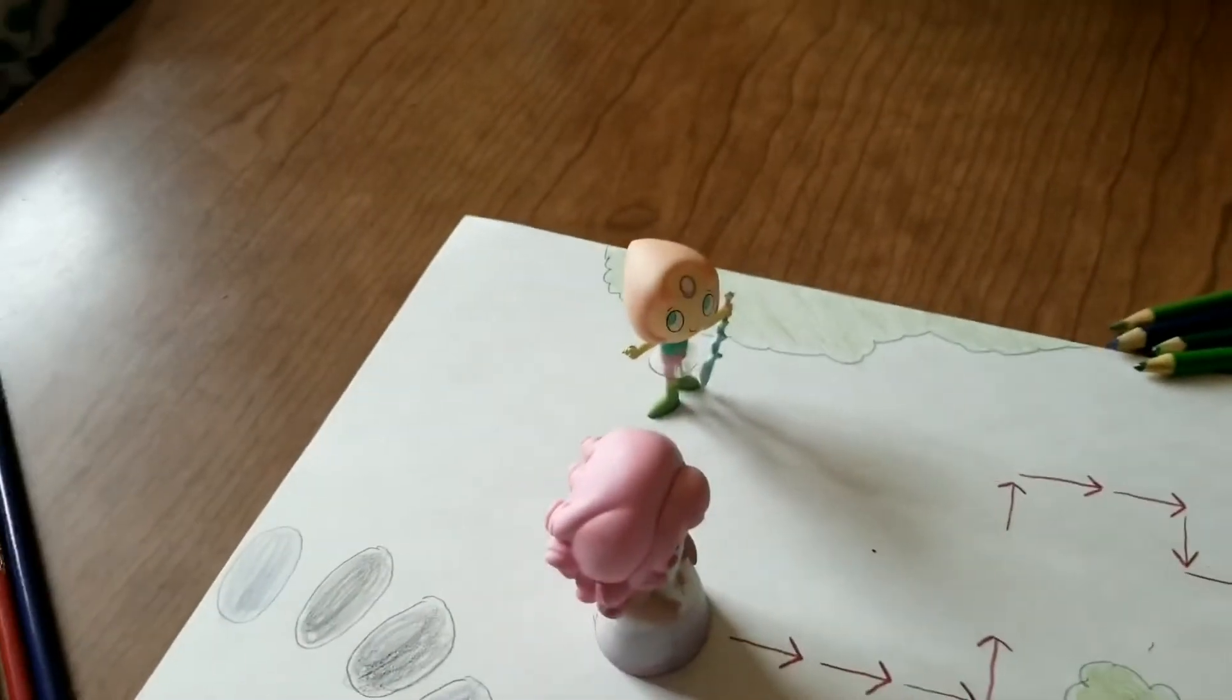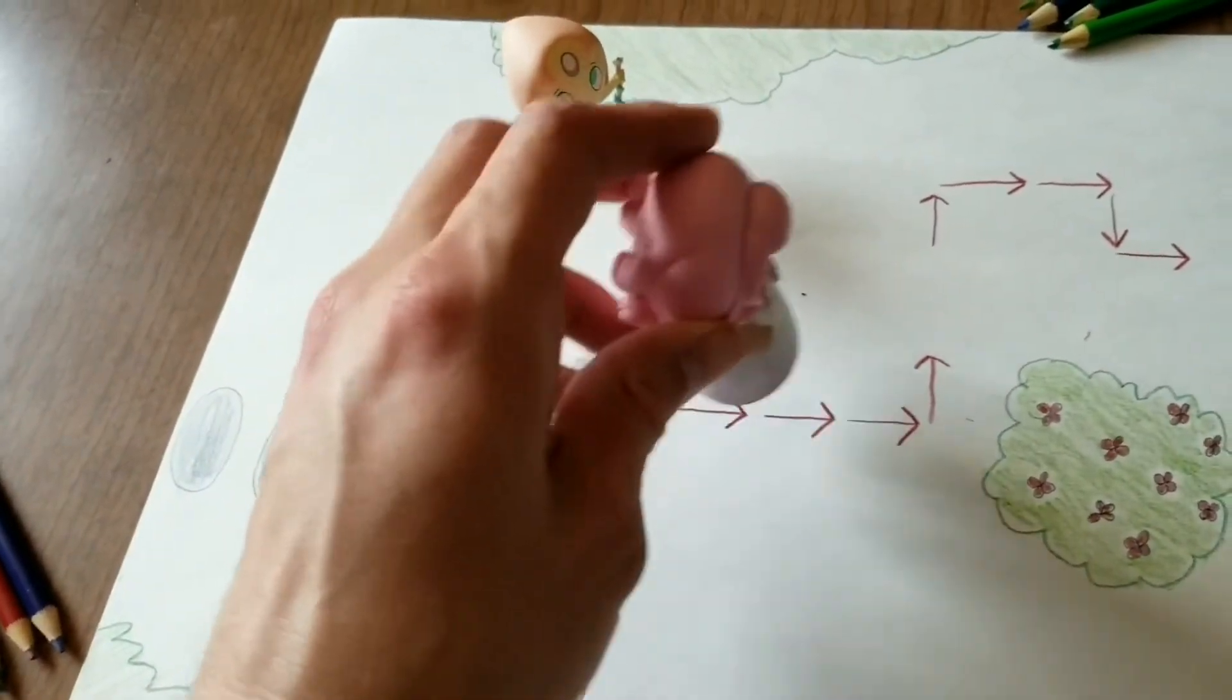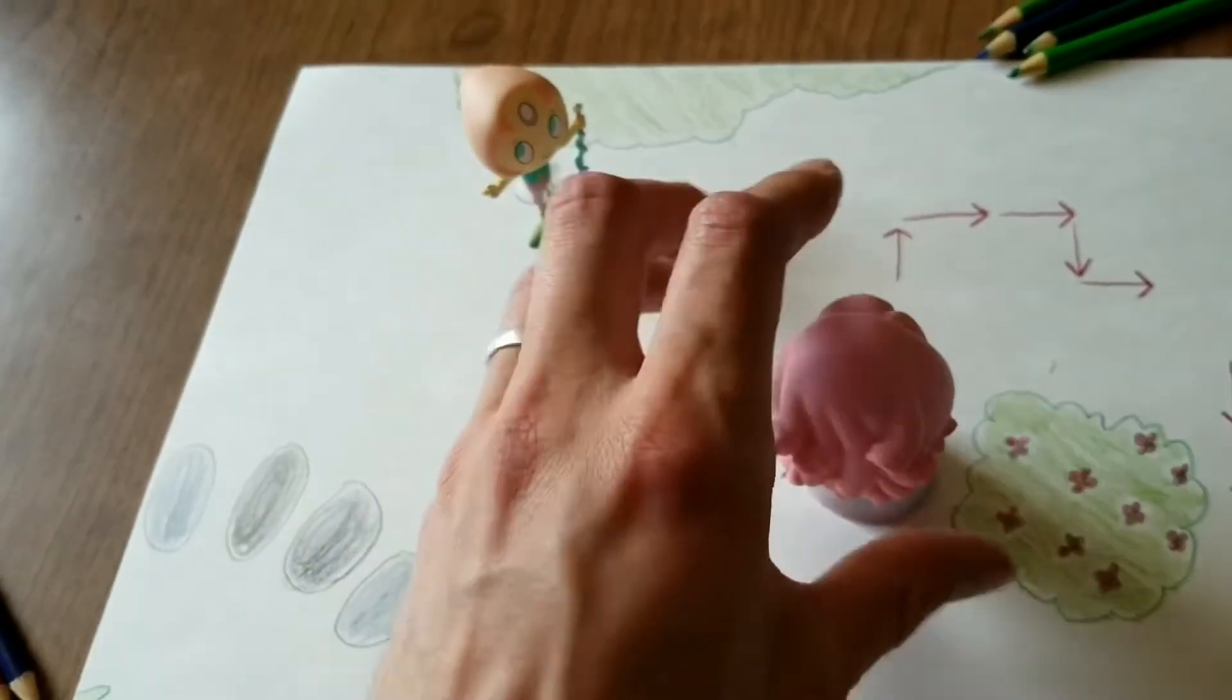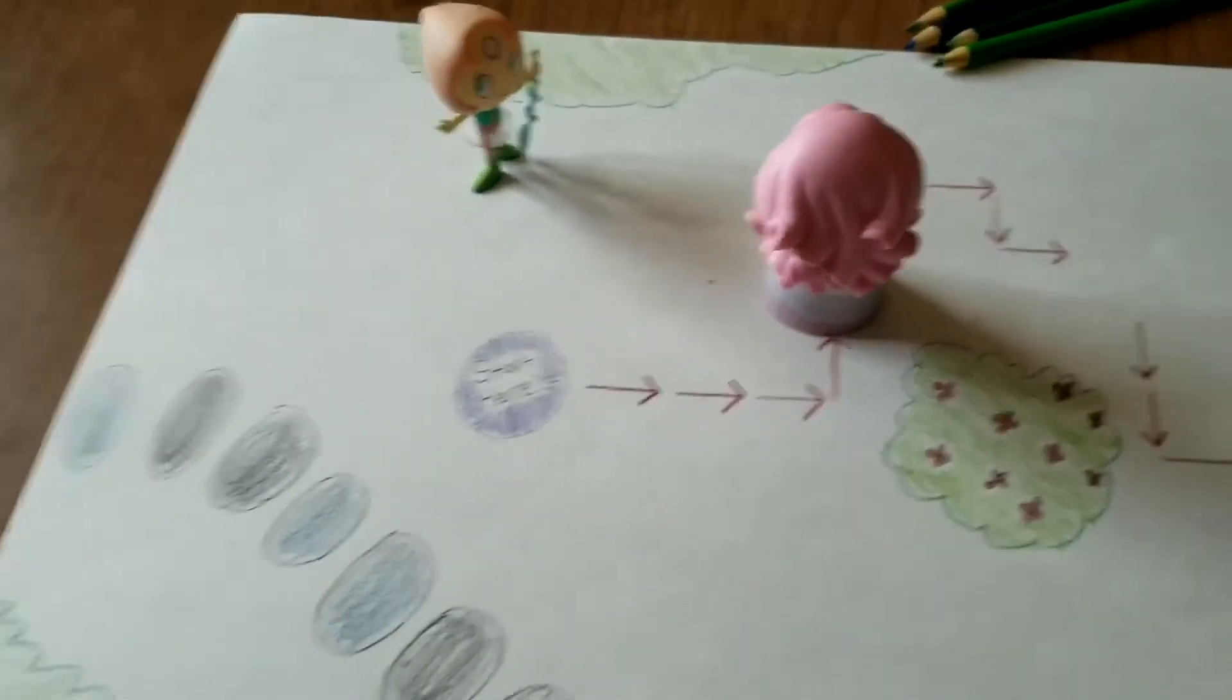So Pearl says the instructions and Rose blindfolded takes her steps and she has a great memory. So she does it successfully. Good job, Rose.